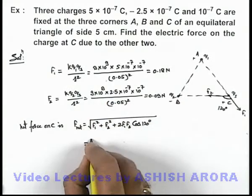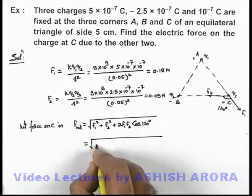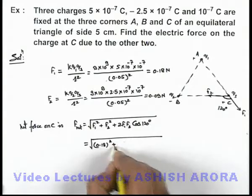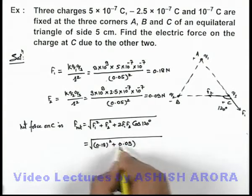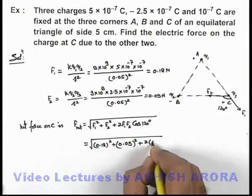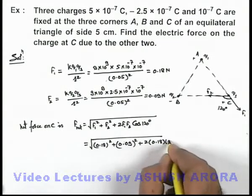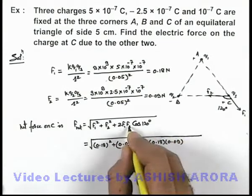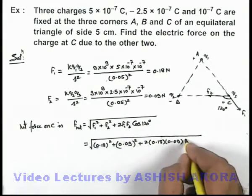If we just solve this expression by substituting the values of F₁ and F₂, here we'll get (0.18)² + (0.09)² + 2 × 0.18 × 0.09 × cos 120°, which can be written as -1/2.